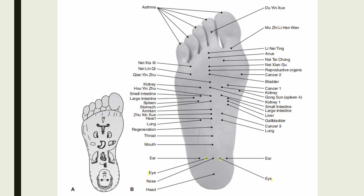The eye point is located 0.6 unit lateral to the nose point — that is, two units from the heel and 0.6 unit from the midline. Indications of the eye point include acute and chronic eye problems. The ear point is located 0.6 unit lateral to the eye point, or two units from the heel and 1.2 units from the midline.